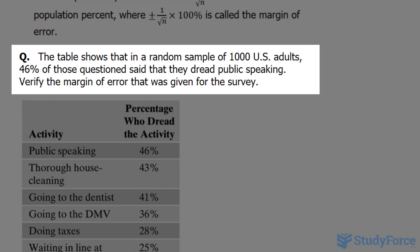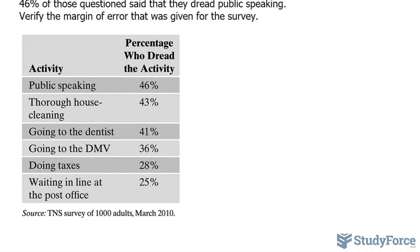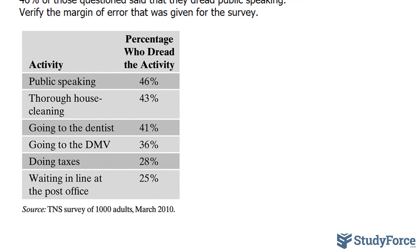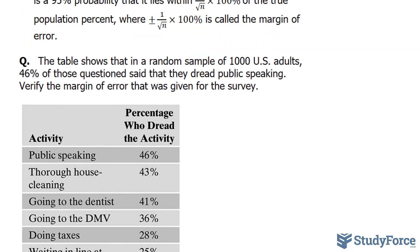46% of those questioned said that they dread public speaking. Verify the margin of error that was given for the survey. So take a look at these numbers. We have the highest at public speaking, which is 46%, and the lowest waiting in line at the post office. Our n value here is 1,000.